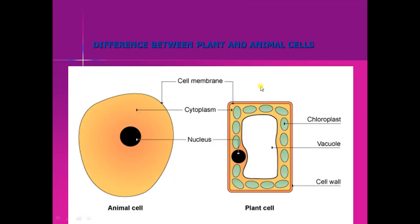There are some differences between plant cells and animal cells. In an animal cell, the outermost covering is the cell membrane, but in a plant cell the outermost covering is the cell wall.